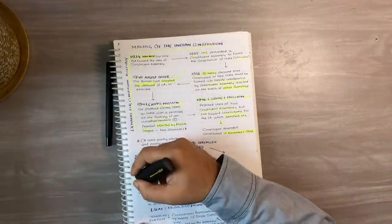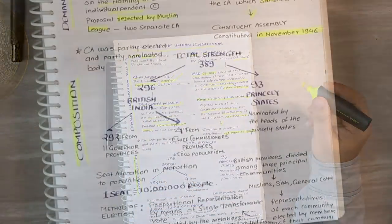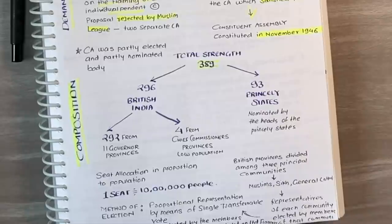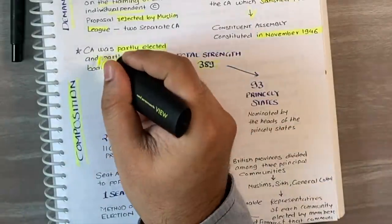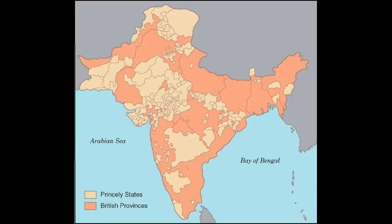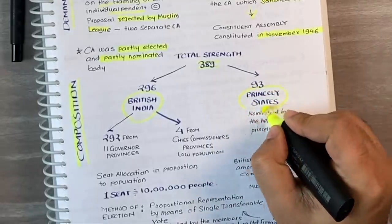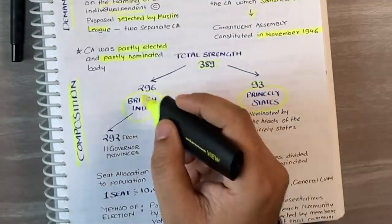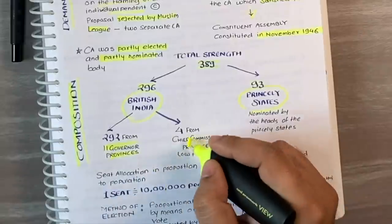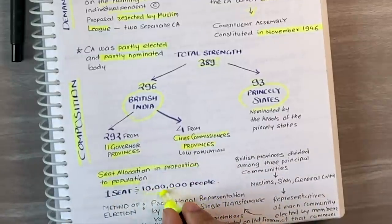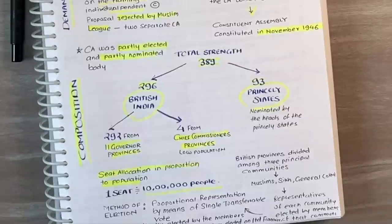The total strength of the constituent assembly was 389. It was a partly elected and partly nominated body. At that time there were two kinds of states: British Indian provinces governed by British officials, and princely states. Ninety-three members were nominated by the heads of the princely states, and the other 296 were from governor provinces and chief commissioner provinces. Seat allocation was in proportion to population, where one seat approximately represented 10 lakh people, that is 1 million people.